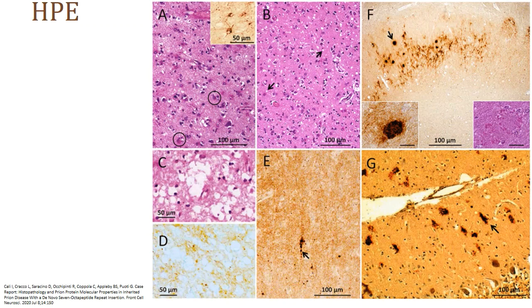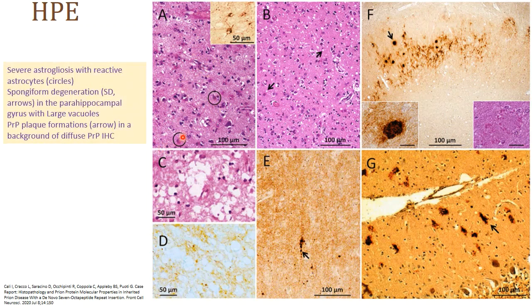Summarizing the histopathological features: there is characteristic astrogliosis with reactive astrocytes — gemistocytes highlighted by GFAP immunohistochemistry. PRP-IHC highlights numerous plaques. Vacuolization in the neuropil is also a very specific feature of spongiform encephalopathies. So besides astrogliosis and spongiform change, there is also presence of amyloid plaques.